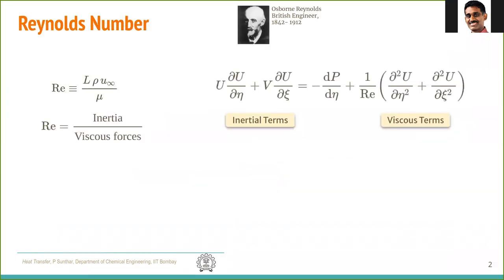Firstly, the most famous number in fluid mechanics: the Reynolds number, named after the British engineer Osborne Reynolds. When you take the Navier-Stokes equation and do the dimensionless form — like we did for the boundary layer — we get the term 1 over Re multiplying the viscous term.